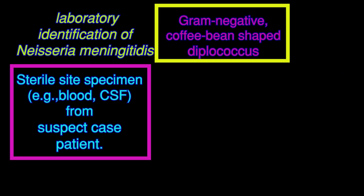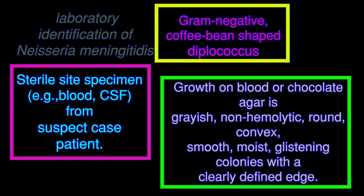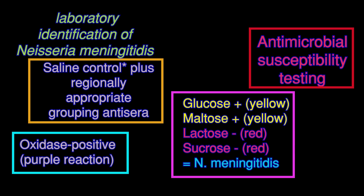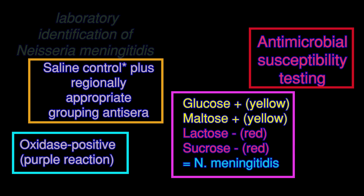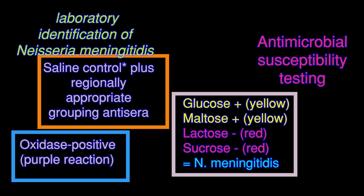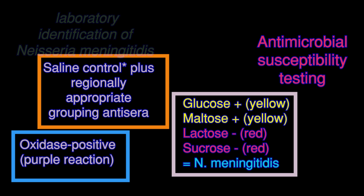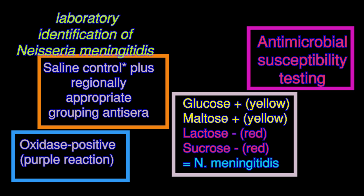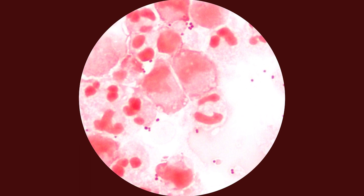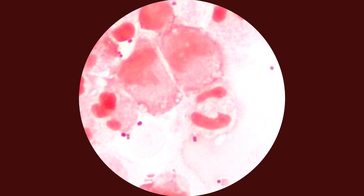Neisseria meningitidis is an encapsulated bacterium classified into A, B, C, Y, and W135 serotypes based on the immunological reactivity of the capsule polysaccharide. This bacterium can cause large-scale epidemics compared to other meningitis-causing bacteria. N. meningitidis is spread through saliva and respiratory secretions during coughing, sneezing, kissing, chewing on toys, and sharing a water source. Gram stain: N. meningitidis is a gram-negative kidney bean or coffee bean-shaped diplococcus, appearing intracellularly or extracellularly in neutrophils.